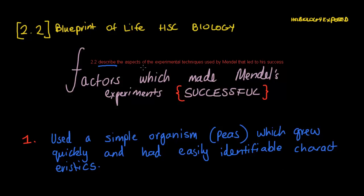Let's deconstruct the question. We want to look at the 'describe' question — it's not asking for much. Essentially, all we need to do is look at the characteristics and define what he actually did which made everything so successful. We're looking at the aspects of the experimental techniques, so we'll have to look at reliability, validity, and accuracy.